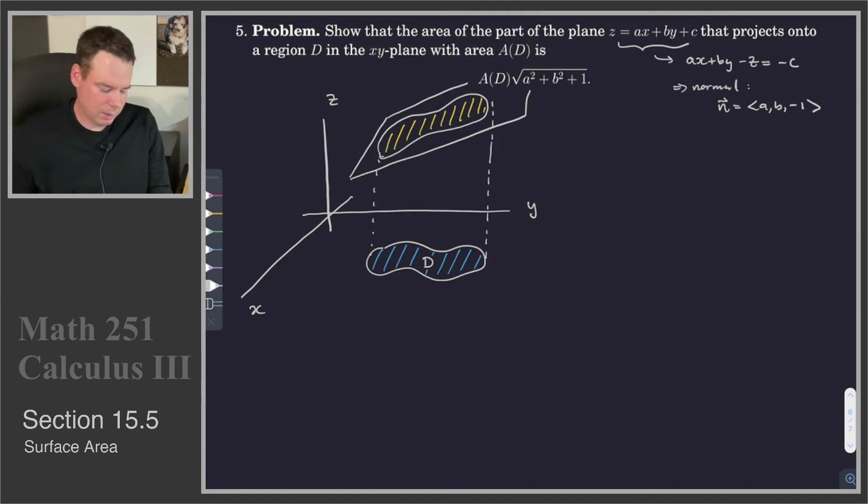And what it's saying is that the area of this region is the length of the normal vector times the area of the region in the xy-plane. And that's what we're going to establish here. That's what we want to establish.